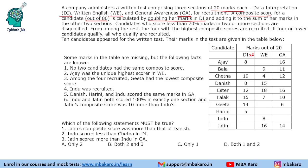Candidates who score less than 70% marks in 2 or more sections are disqualified. So in order to qualify, one must score 70% or more in at least 2 or 3 subjects. From among the rest, the 4 with the highest composite score are recruited. If 4 or fewer candidates qualify, all who qualify are recruited.